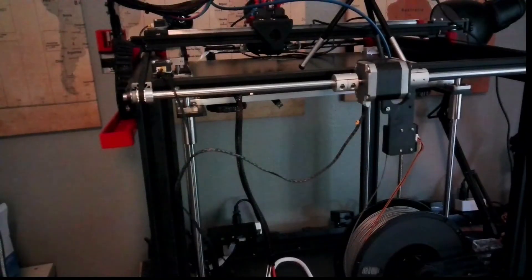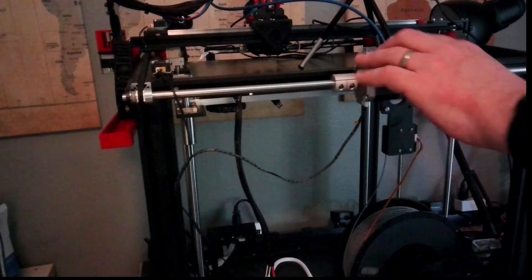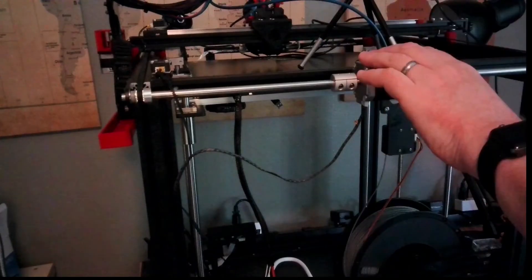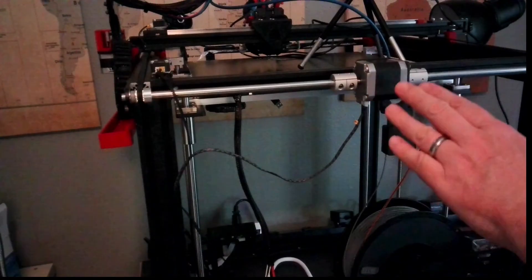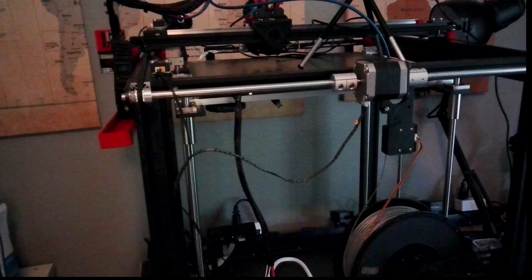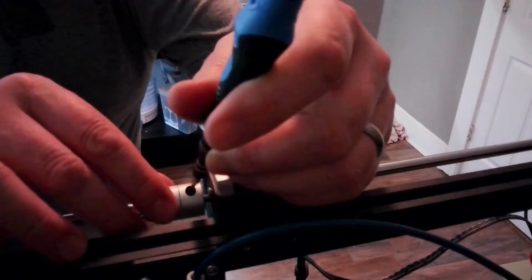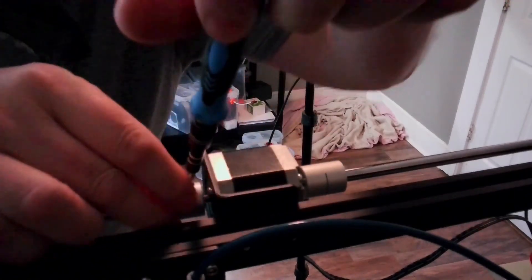Okay, so the Y motor is this motor here and the X motor is over here. So I'm going to start off by working on the Y motor. So we'll get this all set up and see what that looks like. So in order to do this I'm going to start off by loosening these screws here.